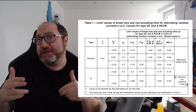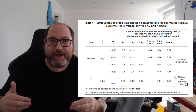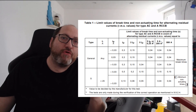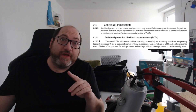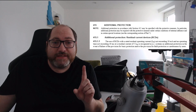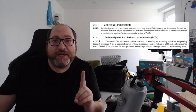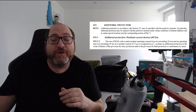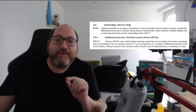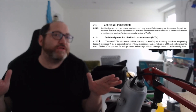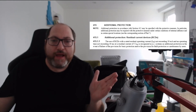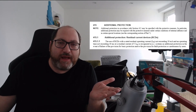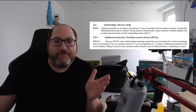Prior to the 18th edition, in the 17th edition, we had a regulation we understood well. Regulation 415 said the use of RCDs with a rated residual operating current not exceeding 30 milliamp and an operating time not exceeding 40 milliseconds at 5×IΔn — so it told us 5×IΔn, which was 150 milliamp.